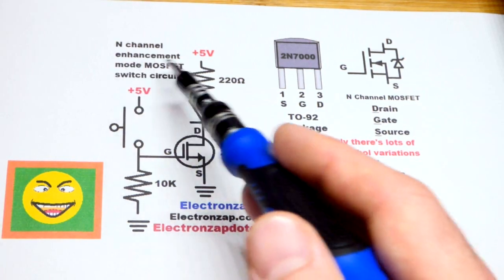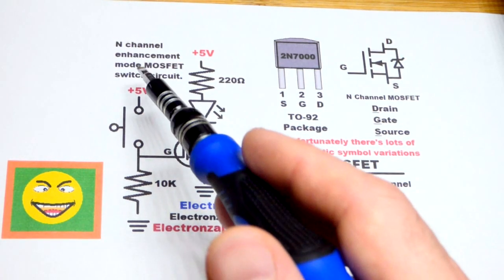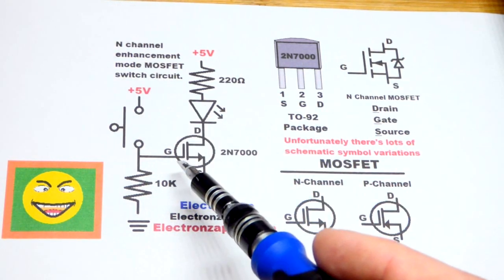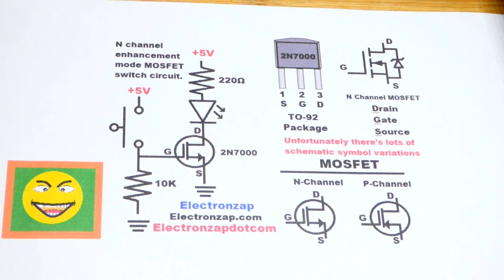There's also depletion mode MOSFETs, n-channel or p-channel. Those want to conduct until you give it a signal to stop conducting. So that's the difference between those two.